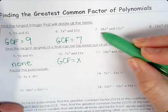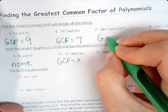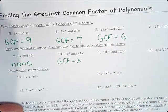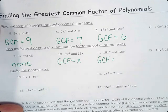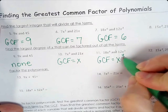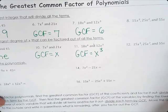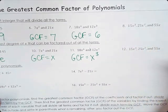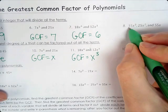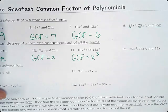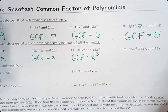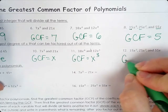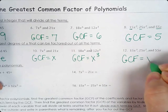Number 7: looking at 18 and 12, the GCF is 6 — that's the largest number that goes into both. And what x's do they have in common? They have x cubed in common, so the GCF is 6x cubed. Number 8 has three terms: 15, 25, and 55 — the GCF of the integers is 5. And the exponent all terms have in common is just x. So the GCF is 5x.